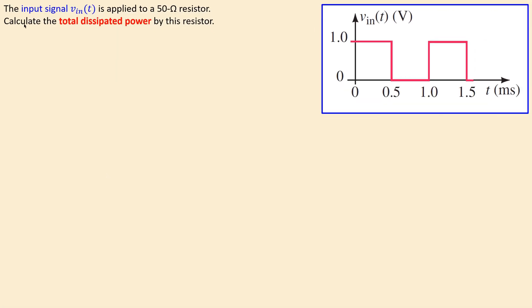What we have is the following situation. We have the input voltage V_in applied to a 50 ohm resistor — it's a pure ohmic resistor — and we would like to calculate the total dissipated power by this 50 ohm resistor. The input voltage is a square wave with an amplitude of 1 volt and a period of 1 millisecond.